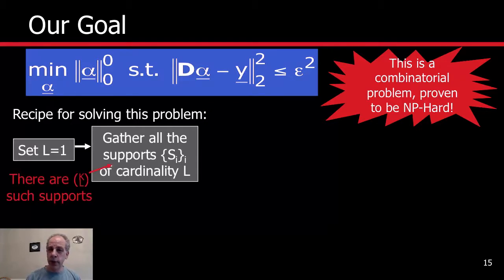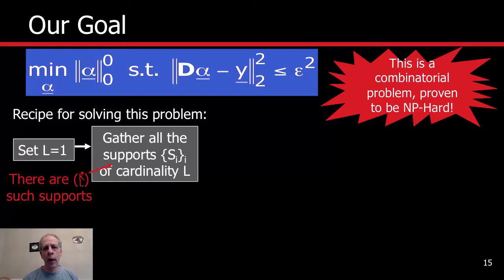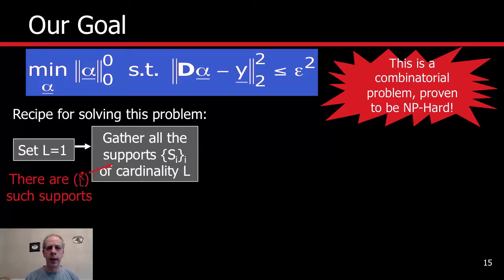How many possibilities do we have? We have L chosen out of K. In the case of L equal to 1, we have K possibilities. When we iterate with L equal to 2, we have on the order of K-squared possibilities. As L increases, we have more and more possibilities. But for now, we basically enumerate all possible supports.